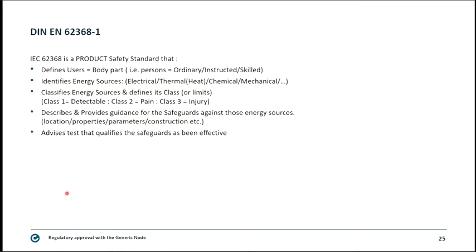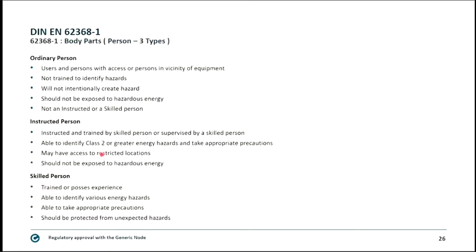The standard defines different types of persons: ordinary persons — for example, a grandma not knowing how to handle any device — instructed persons who have been trained, skilled persons with training and experience such as laboratory workers, and very skilled persons who are trained, experienced, and able to take appropriate precautions.